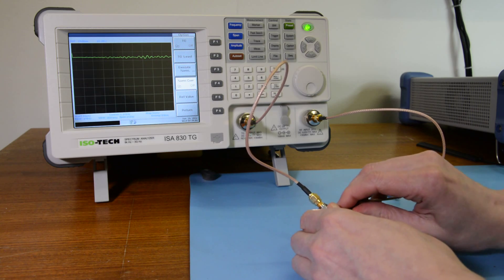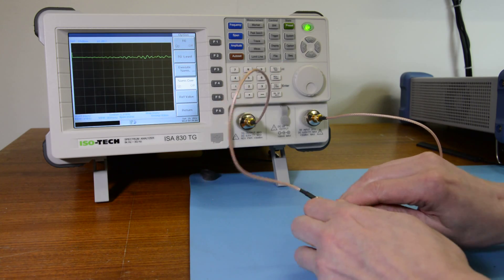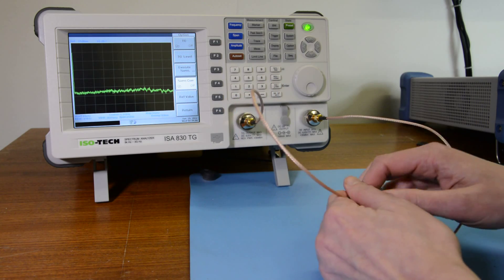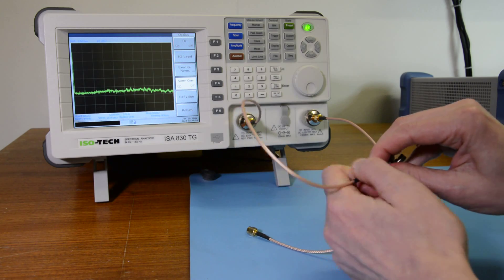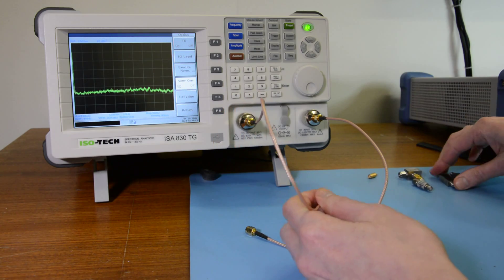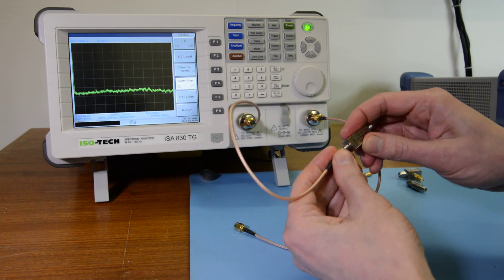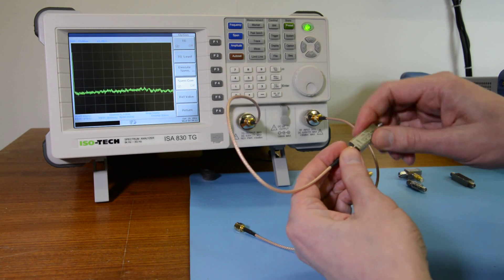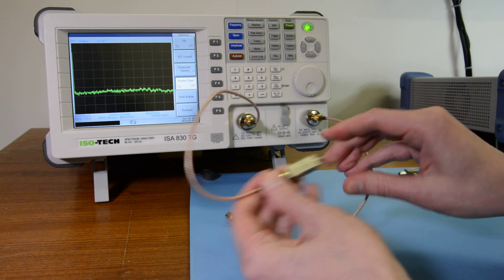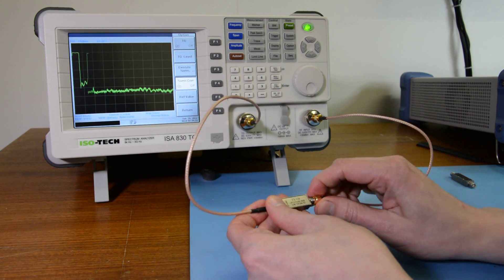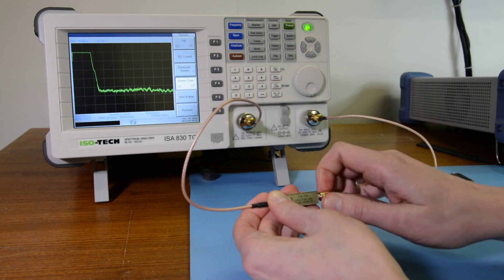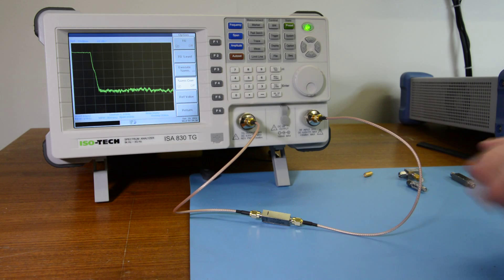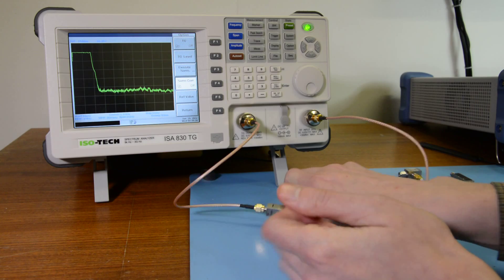We can also try a low pass filter. Just remove this join. So this filter is a low pass filter with a cutoff frequency of 500 MHz. That's pretty much what we'd expect to see.